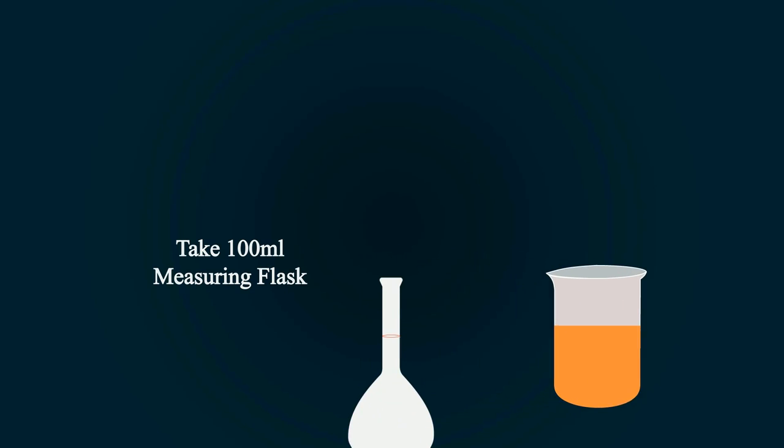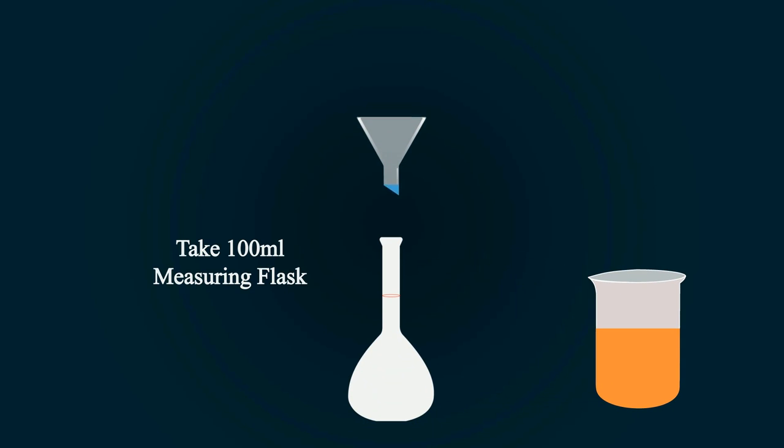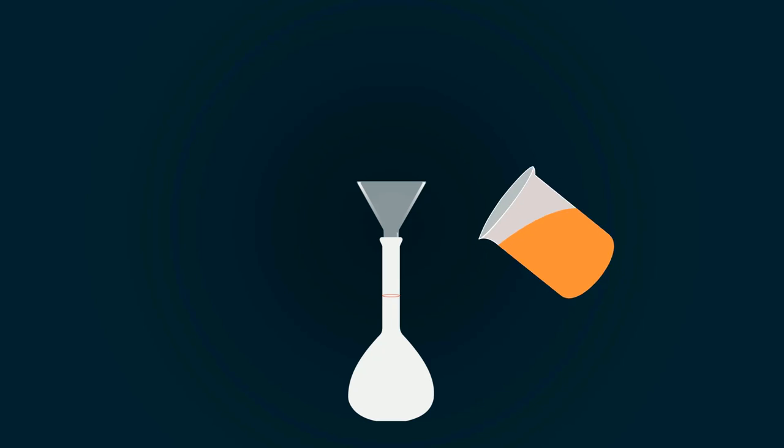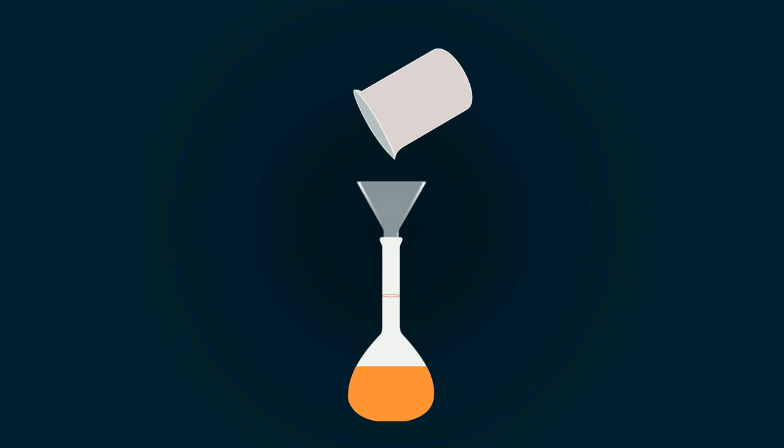Now take a measuring flask of 100 milliliters and put a funnel on the top of the flask. Start pouring all the solution into the volumetric flask.